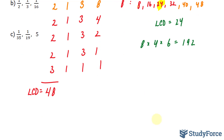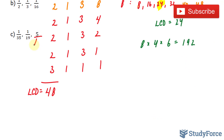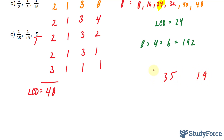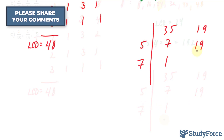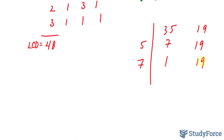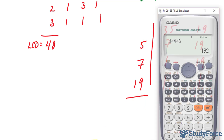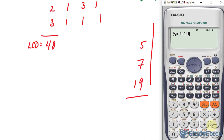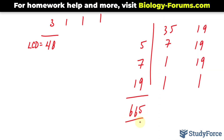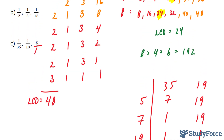Finally, in question C, we have 1 over 35, 1 over 19, and 5. Since 5 is a whole number, its denominator is 1, so we won't worry about it. Let's work with 35 and 19. Both of these numbers are odd. A number divisible into 35 is 5: 35 divided by 5 is 7, and 19 divided by 5 doesn't give a whole number, so we leave 19. A number divisible into 7 is 7: that becomes 1, and 19 stays. A number divisible into 19 is only 19 itself: both become 1. Multiplying 5 times 7 times 19 using our calculator: 5 times 7 is 35, times 19 equals 665. So 665 is the lowest common denominator between 35 and 19.